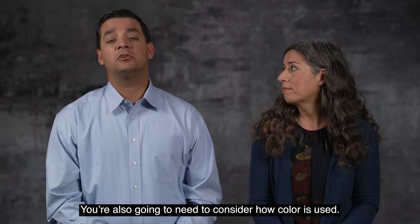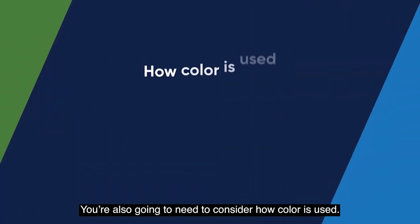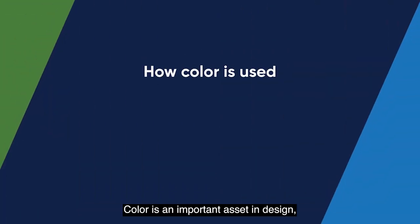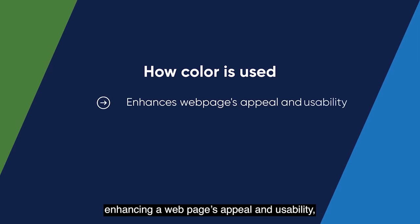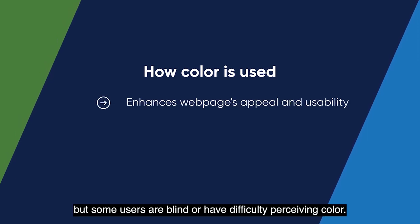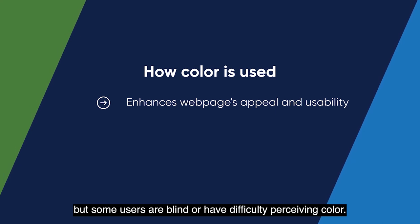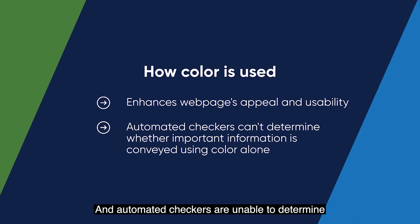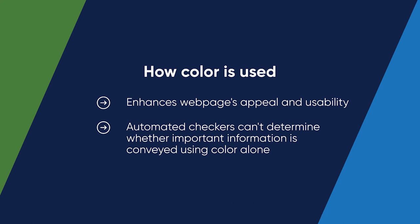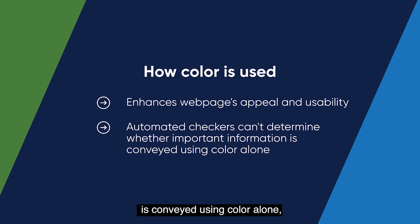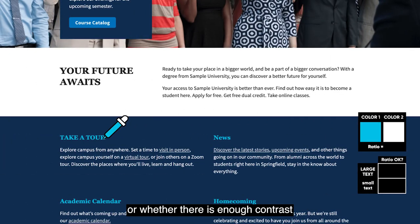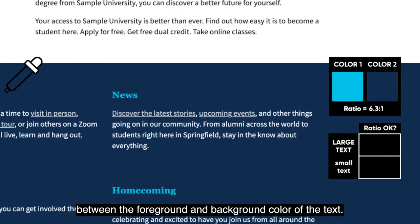You're also going to need to consider how color is used. Color is an important asset in design, enhancing a webpage's appeal and usability. But some users are blind or have difficulty perceiving color, and automated checkers are unable to determine whether important information on a site is conveyed using color alone, or whether there is enough contrast between the foreground and background color of the text.